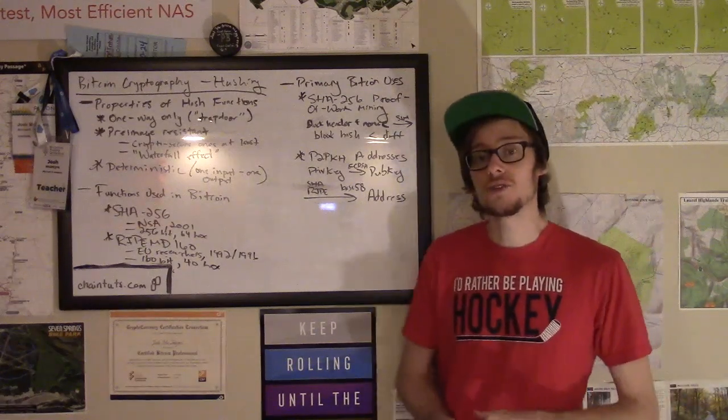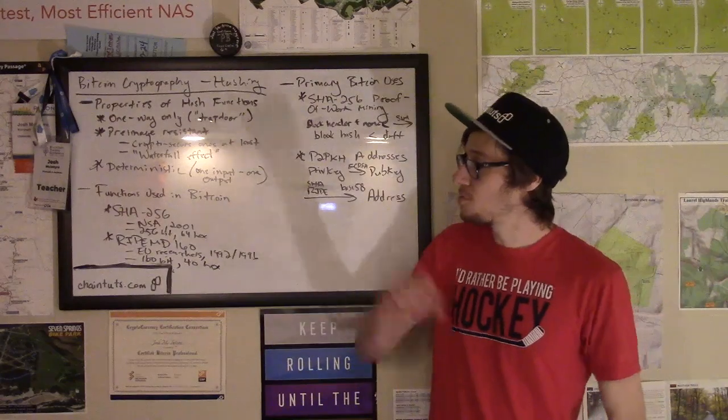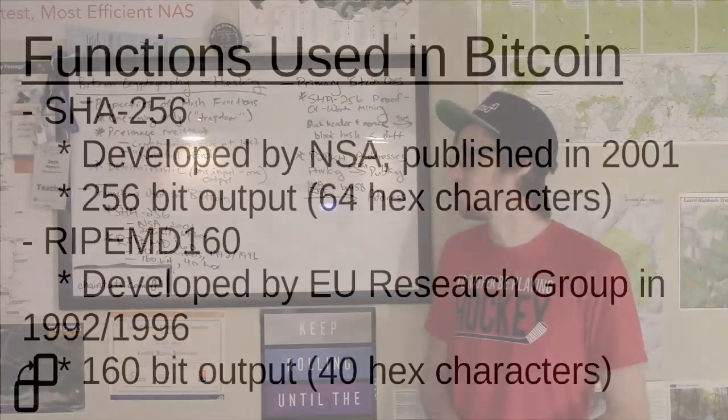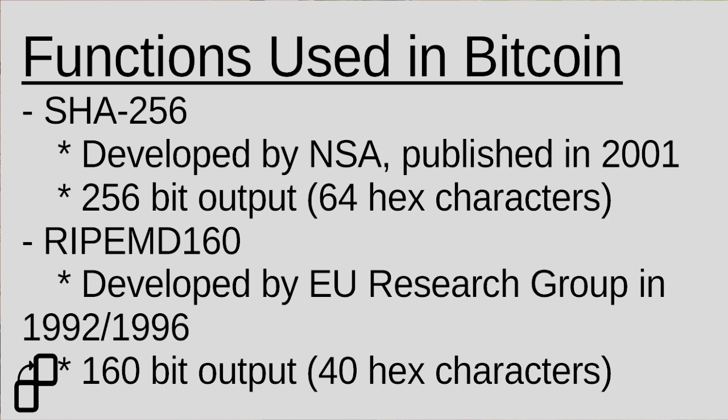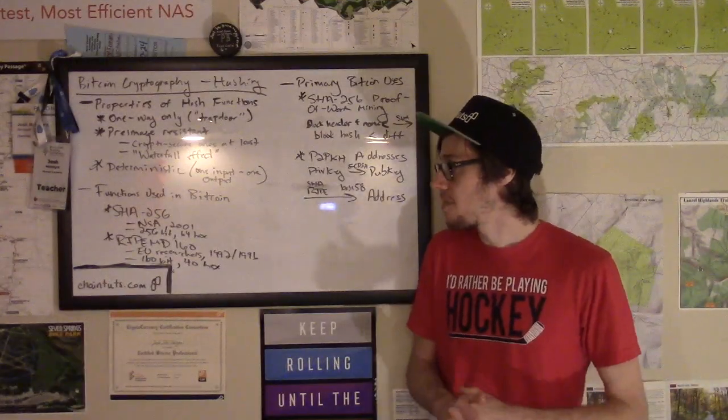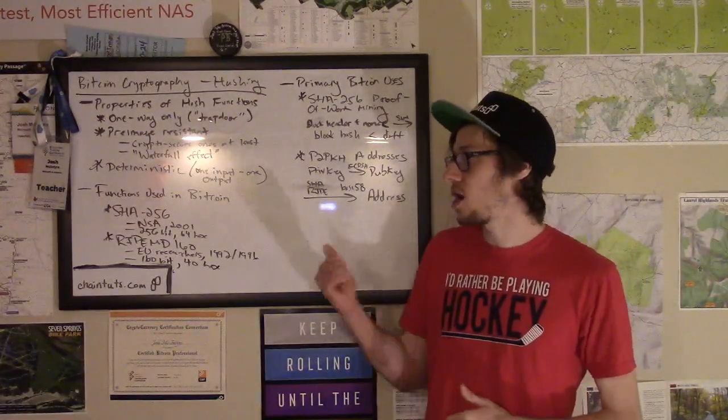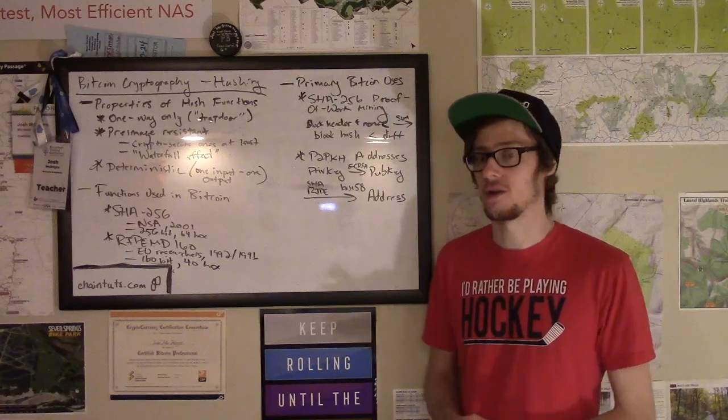So now what functions in particular are used in Bitcoin? The first major one that people often hear about is SHA-256. This is part of the SHA-2 family of hashing algorithms originally designed by the US National Security Agency and published in 2001. And in particular, the 256-bit version of SHA is used in Bitcoin. That's 256 bits for the outputs. And that's often represented in 64 hexadecimal characters.